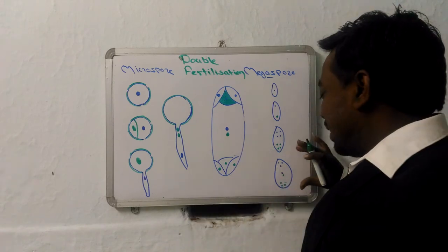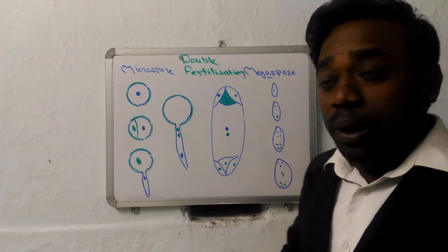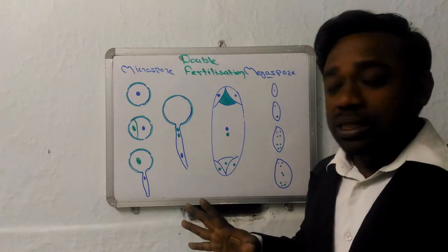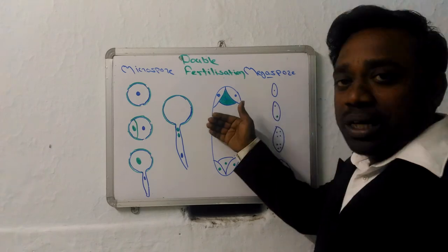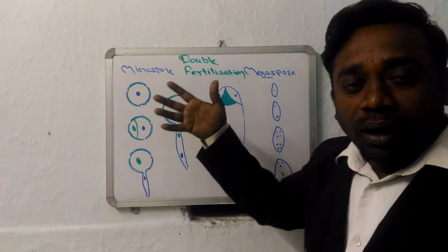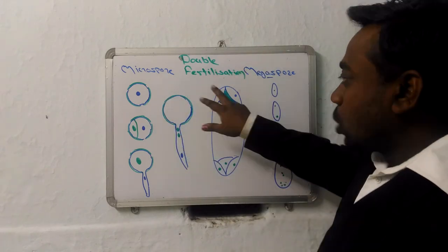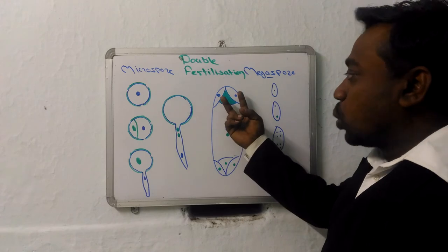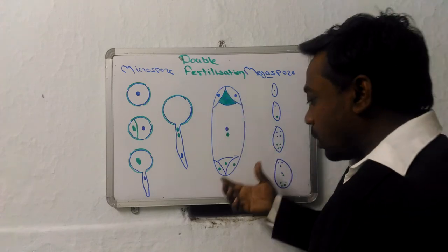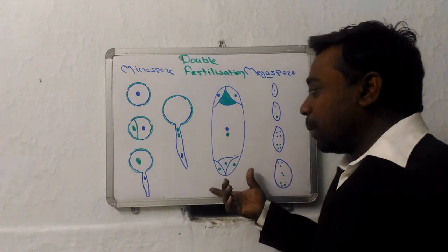Now this is called megaspore. Female gamete in case of angiosperm is now having eight nuclei and seven cells. This will undergo wall formation. Three of micropylar end nuclei will become egg apparatus. Out of those egg apparatus, we will be having two synergids and one is egg. And remaining three, which are at the far end of the micropylar, will be antipodals.